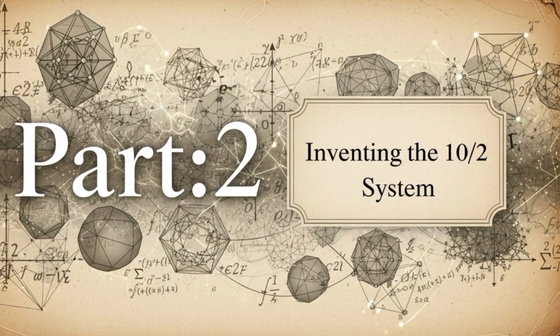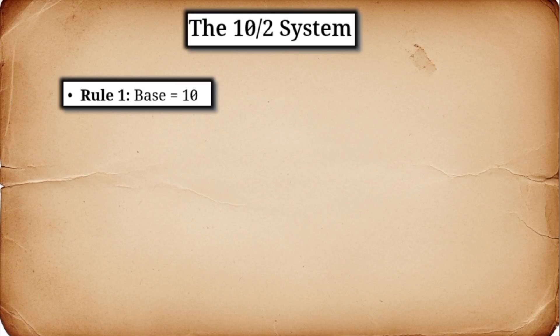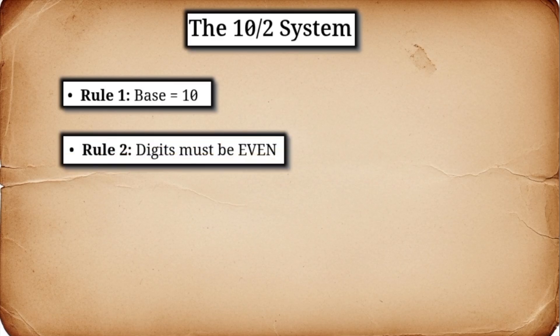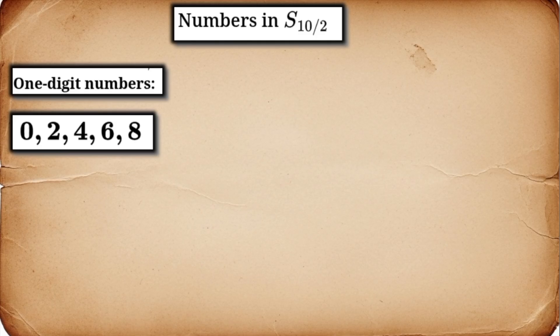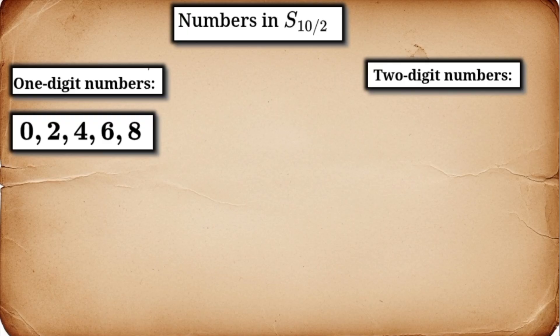Let's create our first new system. We'll keep rule 1, the base is still 10, but we're going to replace rule 2. In this new 10 over 2 system, you are only allowed to use the even digits: 0, 2, 4, 6, and 8. The value of a number is still calculated the same way, but our universe of representable numbers has just gotten much, much smaller. Let's build this universe, one number at a time. What are the one-digit numbers in this system? Well, just the digits themselves: 0, 2, 4, 6, and 8.